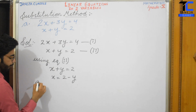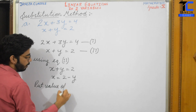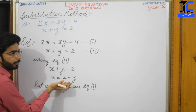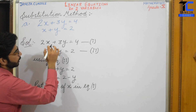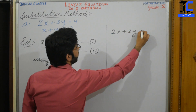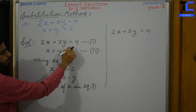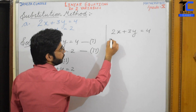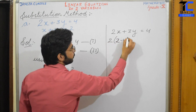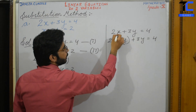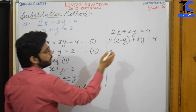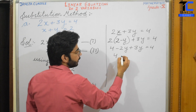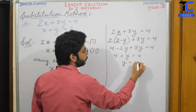We substitute the value of x, that is 2 minus y, into equation 1. Note: we do not put this value back into equation 2, as we won't get anything new. Equation 1 is 2x plus 3y equals 4. Substituting x with 2 minus y: 2(2 minus y) plus 3y equals 4, which gives 4 minus 2y plus 3y equals 4, so y equals 0.